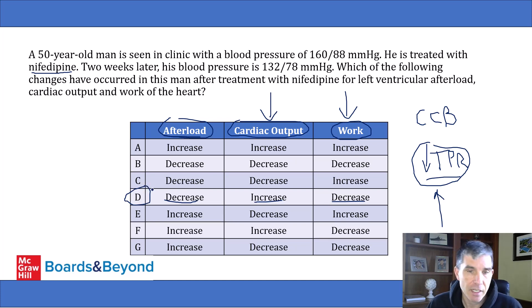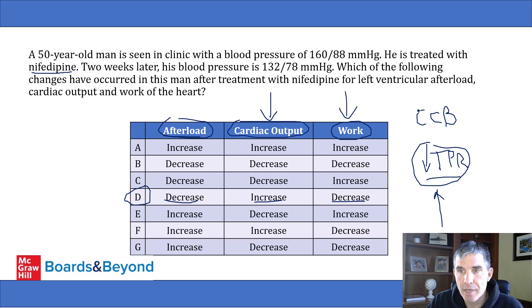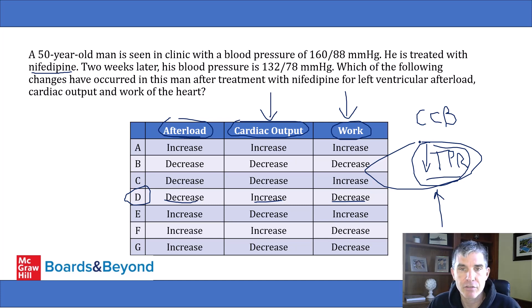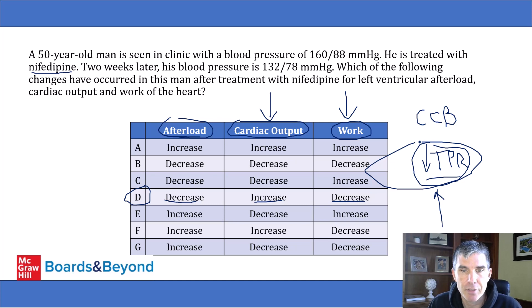The cool thing about physiology is that if you understand what was just described about nifedipine, you can also answer questions about other drugs that lower TPR. The same effects would also occur if a patient were treated with hydralazine — a direct vasodilator — or an angiotensin receptor blocker, which also lowers TPR through vasodilation. Knowing the main physiologic effect of hypertension drugs lets you answer questions about different drugs that work the same way.